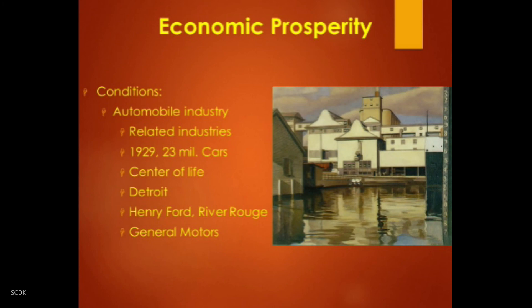That made for about 23 million cars on the roads by the end of the decade, and the automobile had become the center of American life. Americans were driving to work; tourism and travel became a brand new industry; even dating was transformed by the automobile. Whole cities were created by this industry — Detroit, nicknamed the Motor City (its basketball team is called the Pistons), grew from about 285,000 people in 1900 to 1.5 million by 1930.